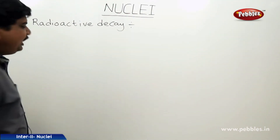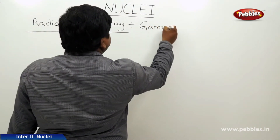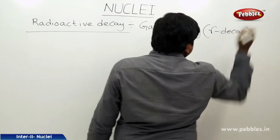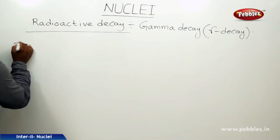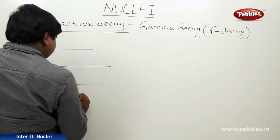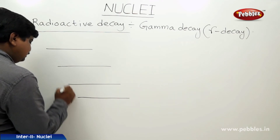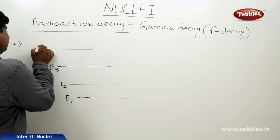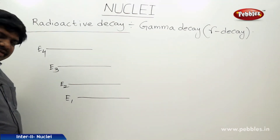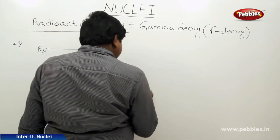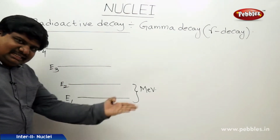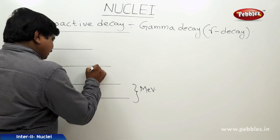The next type of radioactive decay is gamma decay. In the picture of energy levels, each electron occupies successive energy levels: the ground state, first excited state, second excited state, third excited state, and so on — represented by E1, E2, E3, E4 respectively. Whenever the energy level difference is in the order of MeV (mega electron volts), this energy can be received or released by the electron, creating the possibility of excitation or de-excitation.